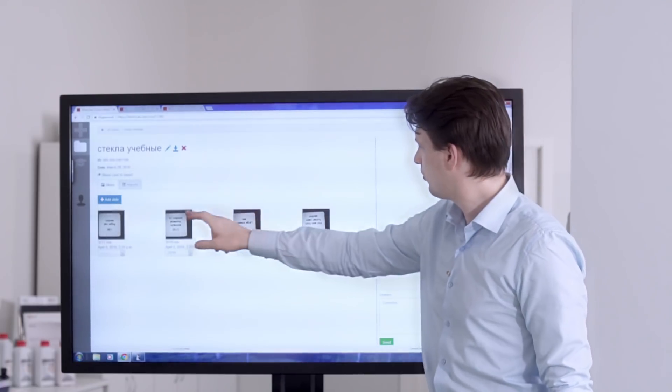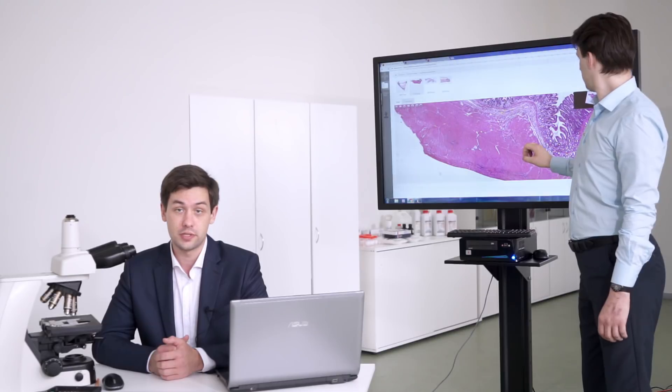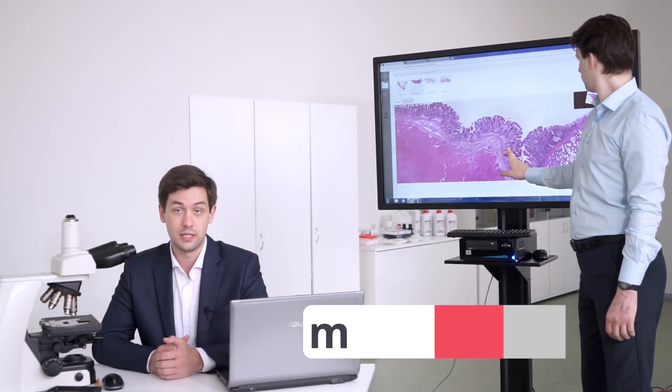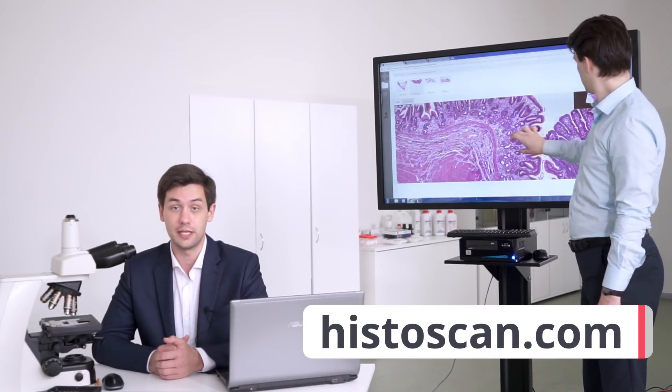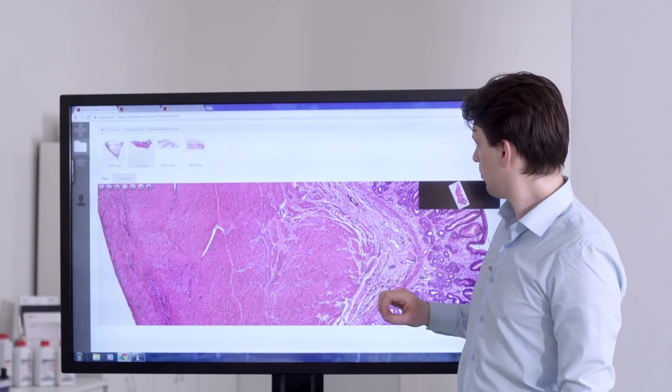But as a rule, these images are quite big and it's easier to use special portals for image sharing. One of these portals is toscan.com. It's a very simple and useful platform where pathologists can share information and knowledge between each other.